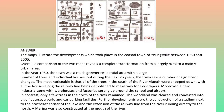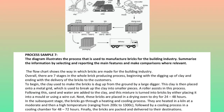A marina was also constructed at the mouth of the river. The diagram illustrates the process that is used to manufacture bricks for the building industry. Summarize the information by selecting and reporting the main features. The flowchart shows the way in which bricks are made for the building industry. Overall, there are seven stages in the whole brick-producing process, beginning with the digging up of clay and ending with the delivery of the bricks to the customers.